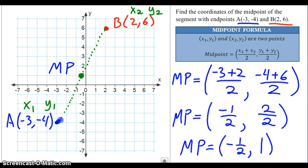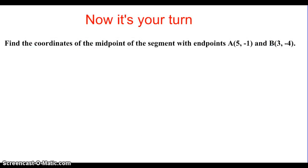So the midpoint coordinates, we have the midpoint is at negative 1 half comma 1, and that does look like just about there. There's negative 1 half and here's 1, so there's our midpoint.